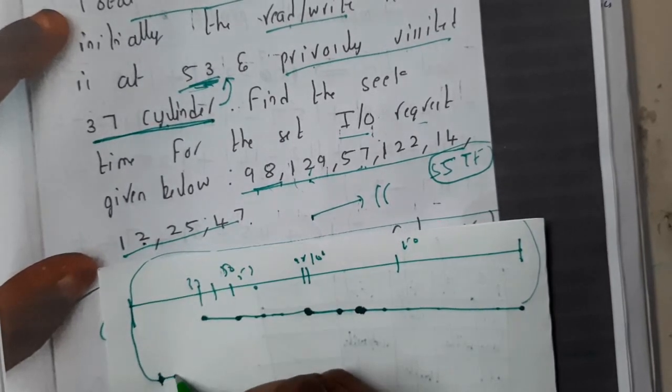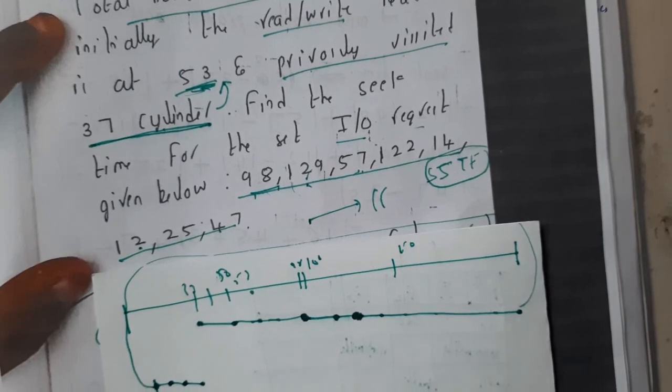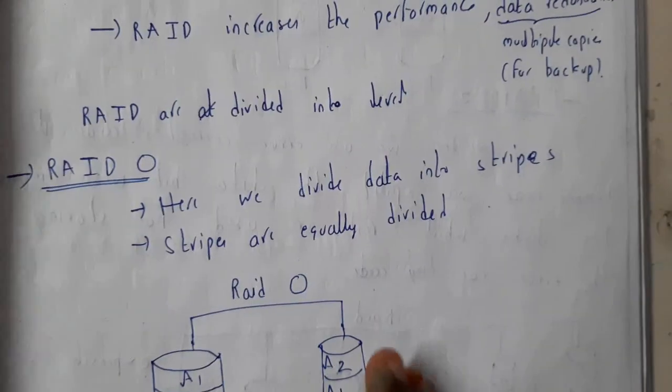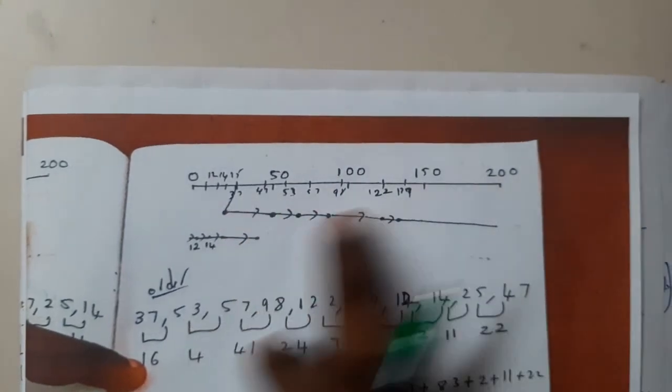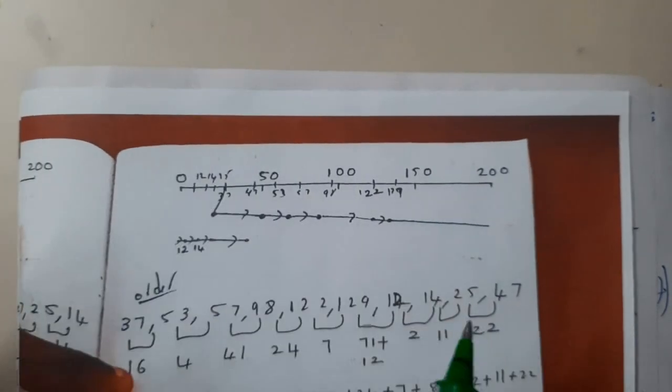After 12 we have 14, 25, 47. So this is the way of approach which you will be drawing. I'm just giving you an outline. You need to draw it neatly, that is you should draw it a bit neatly when compared to mine. Now once you are done with it, to calculate the seek time...